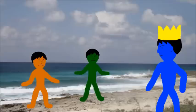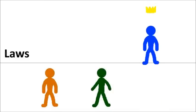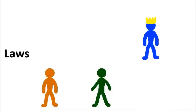Charlie could only establish himself as ruler and maintain that position if he could somehow convince Adam and Ben that a ruler is necessary, and that with no ruler — anarchy — there would be chaos and disorder. If Charlie is able to maintain a monopoly of arbitration and ultimate decision-making, he would have put himself above the law, and Adam and Ben can no longer be considered free men.